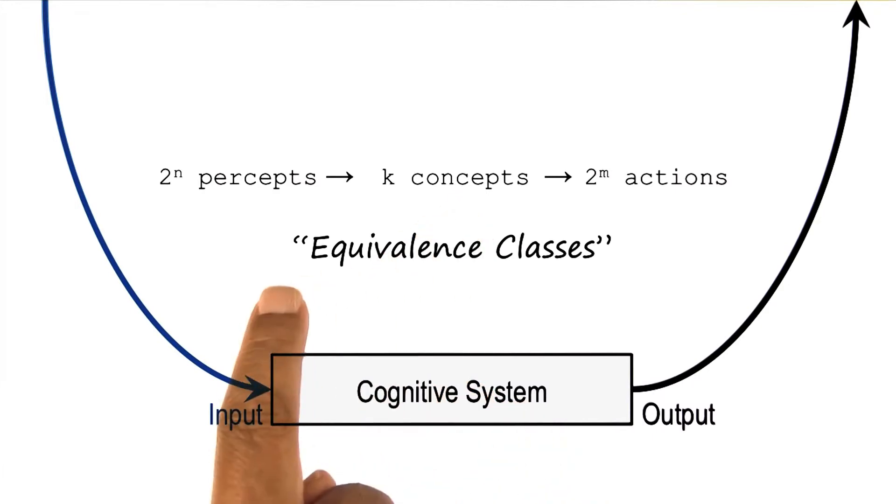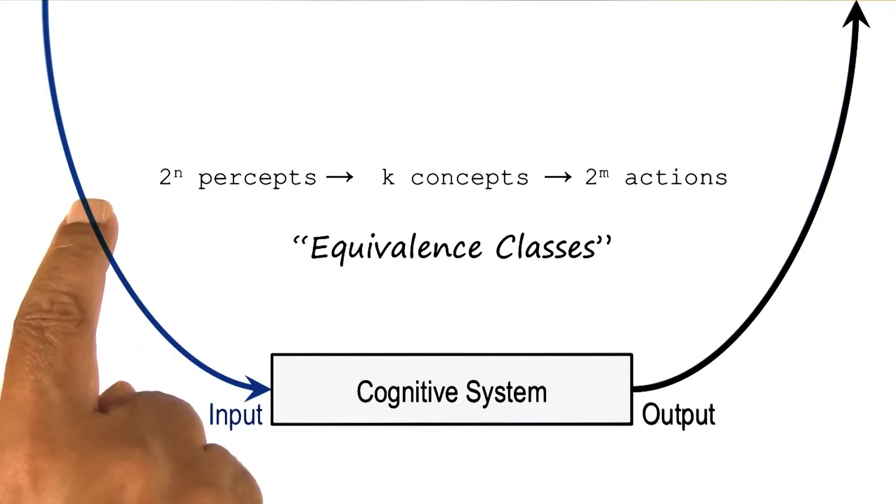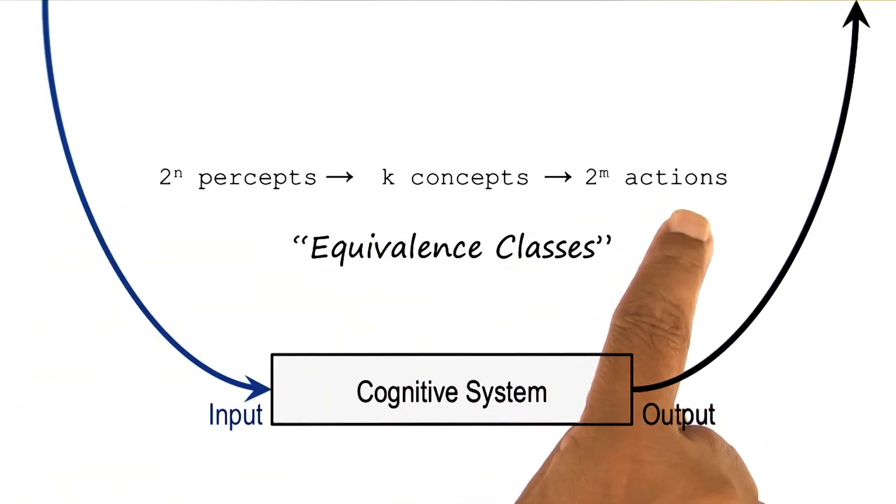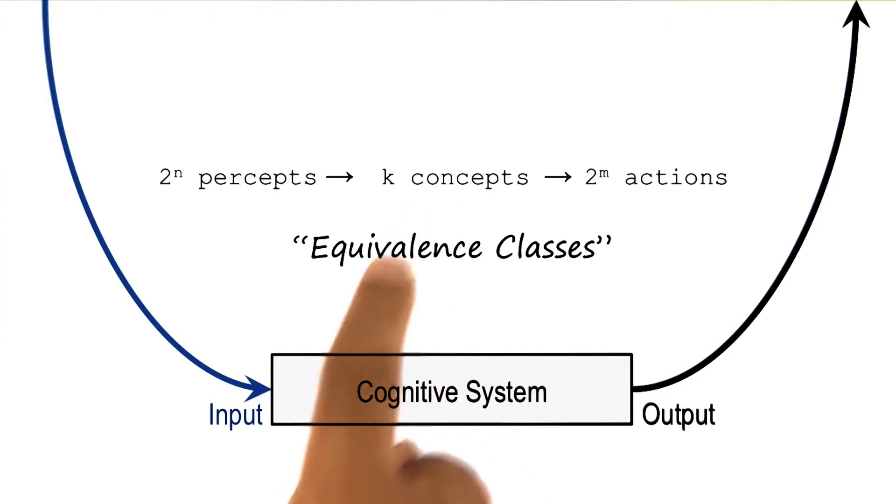So these concepts are equivalence classes of these percepts. Now, instead of indexing my actions on the combinations of percepts, I index my actions on the equivalence classes that I'll call concepts.